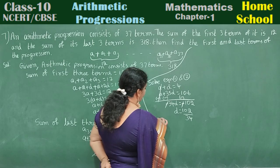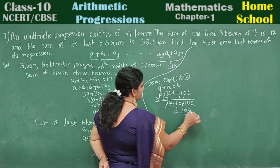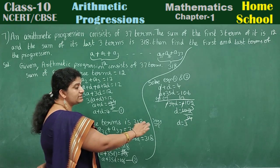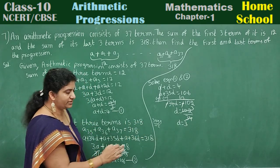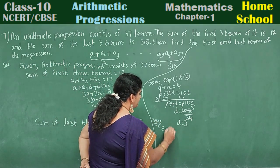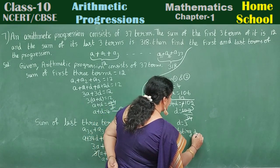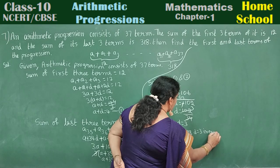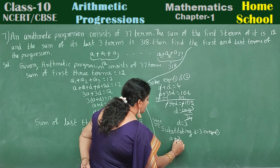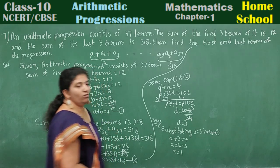Since minus 34d equals minus 102, dividing both sides by 34, d equals 3. This d is the common difference. Substituting d equals 3 into equation 1: a plus 3 equals 4, so a equals 4 minus 3, which gives a equals 1.